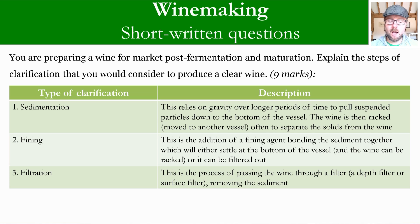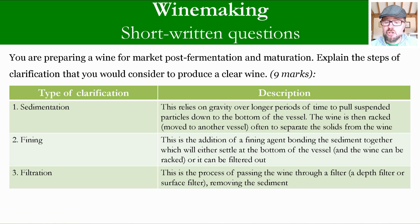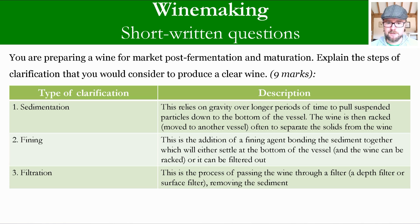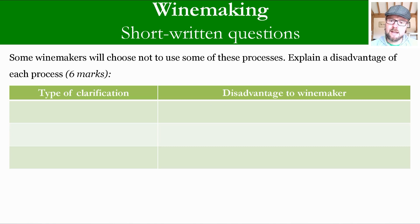The third clarification process is filtration — the process of passing a wine through a filter. Examples given in the Level 3 syllabus include a depth filter, which is a series of filters of different types of material such as sheet filters and clay filters, or a surface filter, which is more like a giant sieve. Both of these will remove settlement and prepare the wine for clarity. That gives you three types of clarification with three descriptions for nine marks.